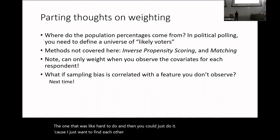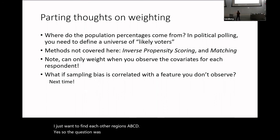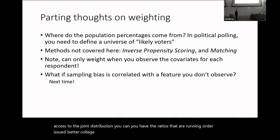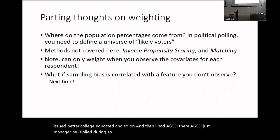A student asked about the marginal distribution notation from a few slides ago: if you don't have access to the joint distribution, you have the ratios that are women, the ratios that are college educated, and so on, labeled a, b, c, d — multiplying ratio a times ratio b times c times d.